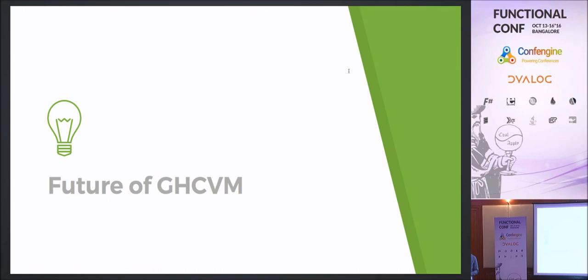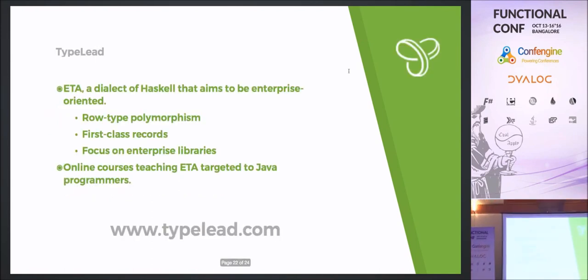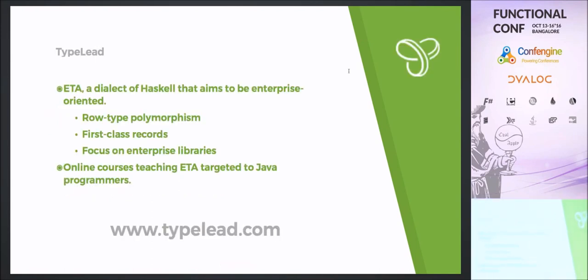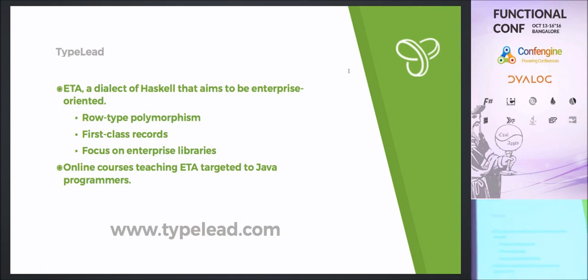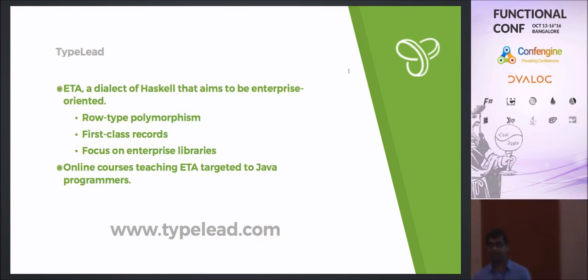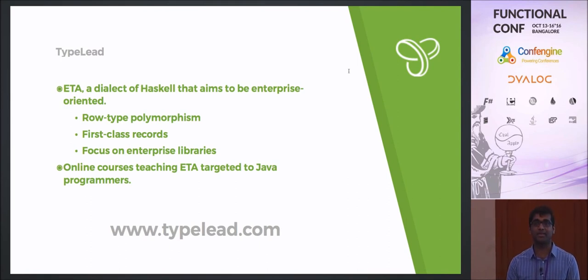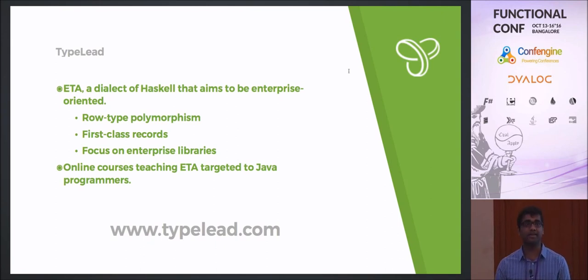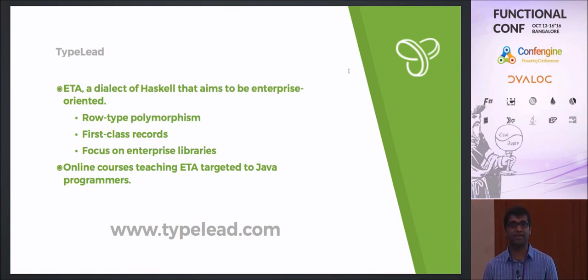I want to spend the last few minutes talking about where this is going. First, I want to introduce Type Lead, a startup I'm working on to commercialize this work and provide commercial support for GHCVM. Another announcement: I actually want to create a new language entirely, branched off of GHC 7.10.3, focused on adding all the features necessary to get this into industry. Things like row type polymorphism to solve the Haskell records problem.